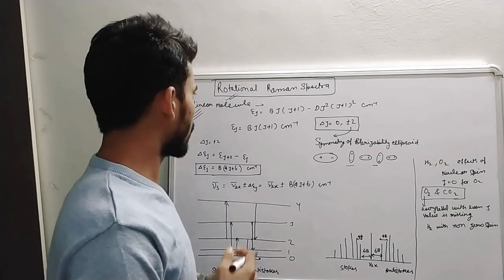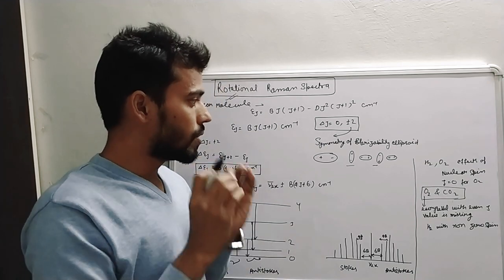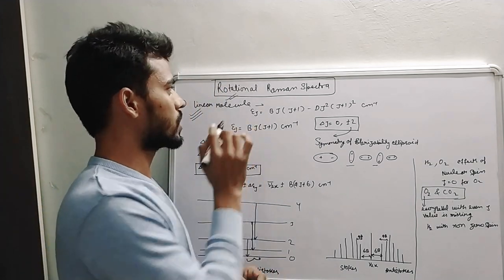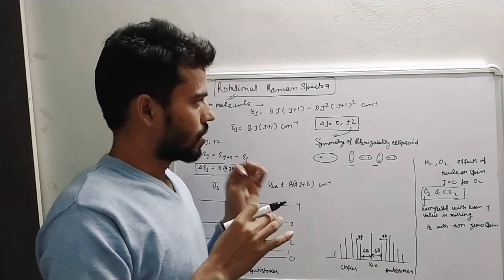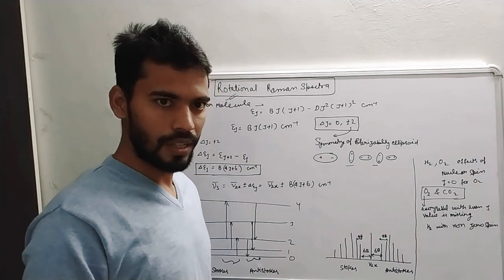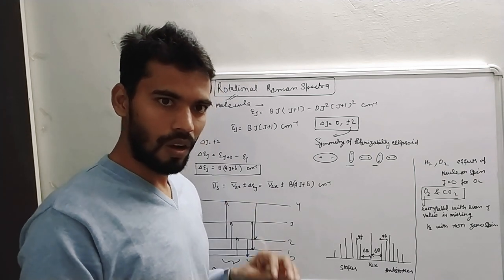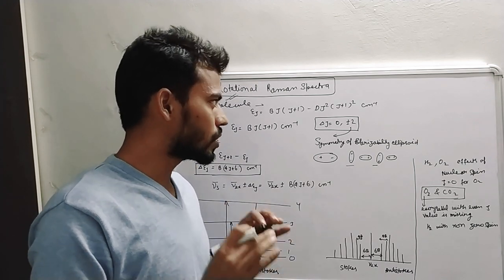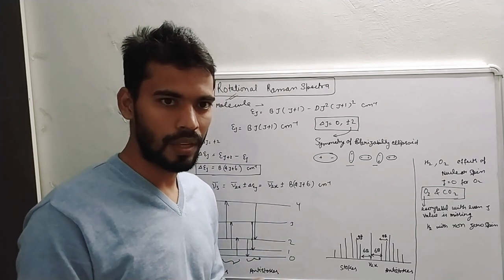Which type of molecule can show rotational Raman spectra? Every molecule can show rotational Raman spectra, either it has a dipole moment or not. So homonuclear diatomic molecules or heteronuclear diatomic molecules, both can show rotational Raman spectra.